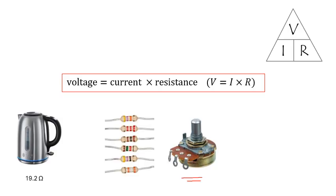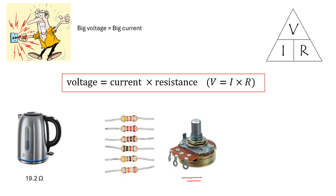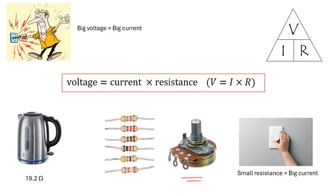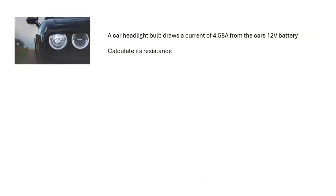Voltage is current times resistance. Remember, big voltage equals big current. The bigger the voltage, the more current you're going to get because the voltage pushes the current around the circuit. So a big voltage, lots of current. Also remember, small resistance equals a big current. Big resistance means it's hard for the current to get through, so it will be small. Small resistance means the current will be big. So this dimmer switch here would be a variable resistor. When you make the resistance smaller, then the current gets bigger and the lights get brighter. Have a go at this one. Pen, paper, calculator. There you go. So R equals V over I. 12 over 4.58, 2.62 ohms.